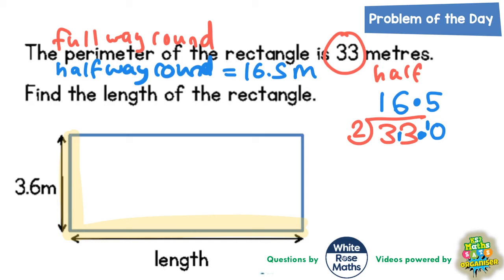Now, we've just said that halfway round is this 16.5. So the length plus the 3.6 for the width must be equal to the 16.5, which is halfway round. So if we just subtract the 3.6 off of 16.5, the number which will be left must be equal to the length. So that's what we've got to do. 16.5 subtract 3.6.